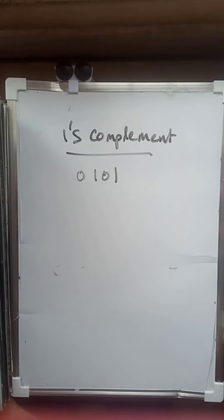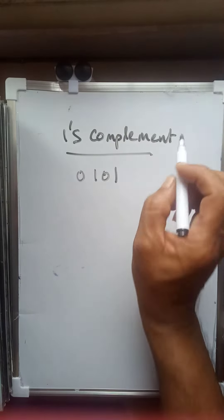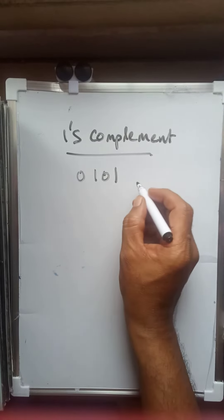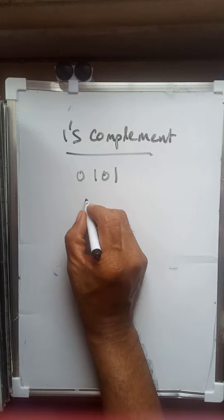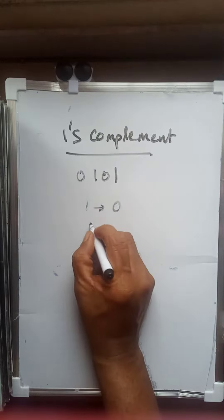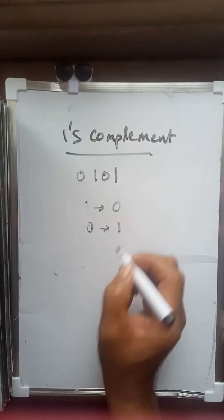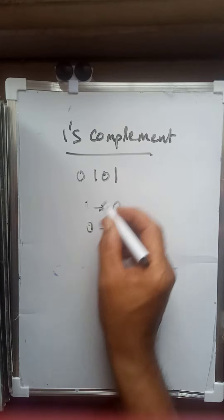This is the one's complement of a particular number. To find the one's complement, there is only one rule: in binary, one is converted to zero and zero is converted to one. There are only two binary digits, so there are two options.